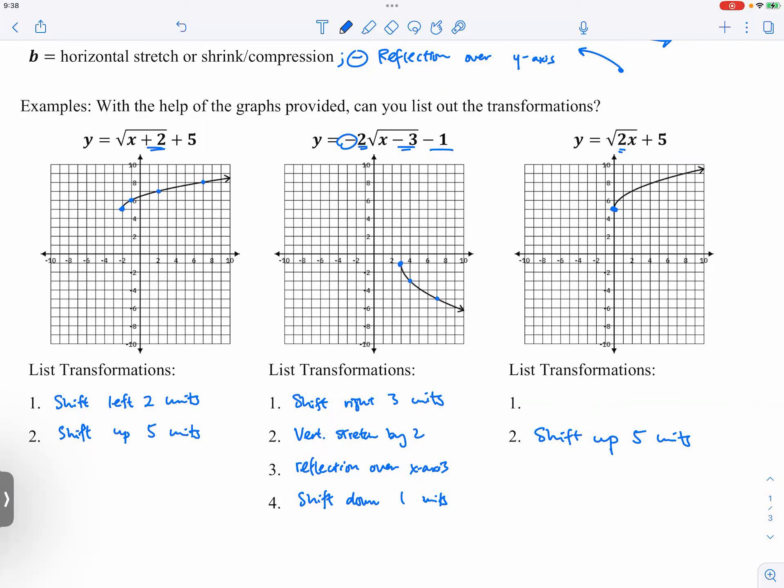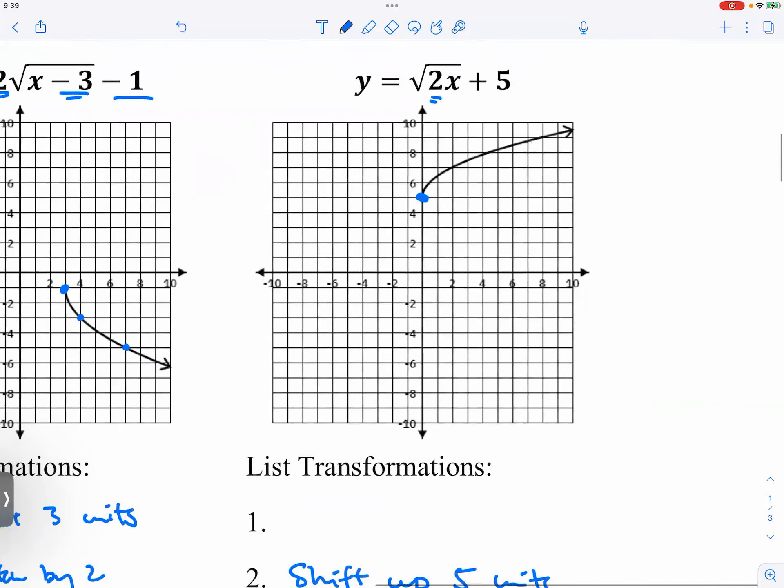The number in front of x always causes some trouble. What does that two mean? It's a compression, which way? It's a horizontal compression by... So if you remember what we did before, the b value is always one over. That's how we know it's one over two. And because it's a number less than one, that means it's a compression or a shrink - either way. You can choose either word.